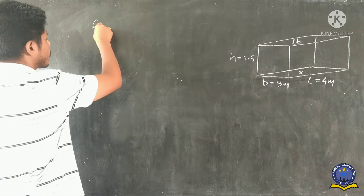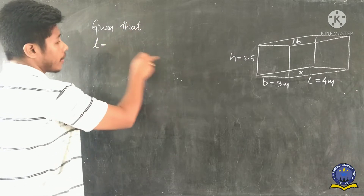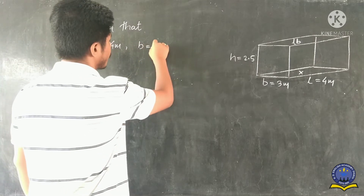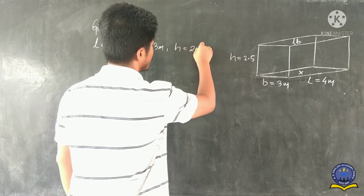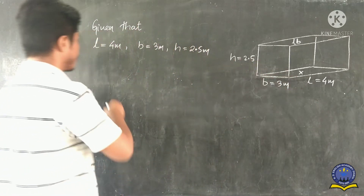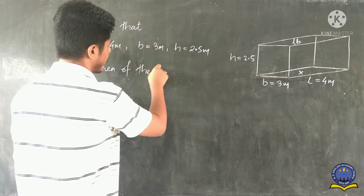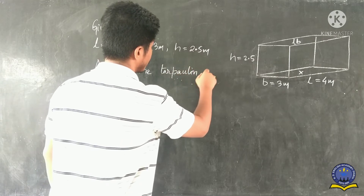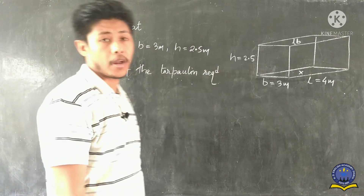Writing down the given data: length = 4 meters, breadth = 3 meters, height = 2.5 meters. We have to find the area of the tarpaulin required.